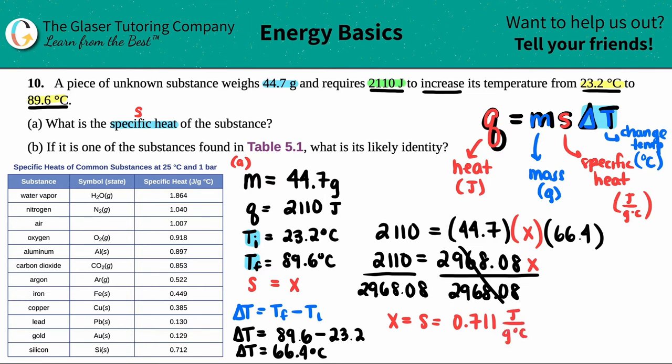And that's in the specific heat units of joules per gram Celsius. So that's the answer for letter a. The specific heat for this substance is 0.711 joules per gram Celsius. So that's the answer for a.